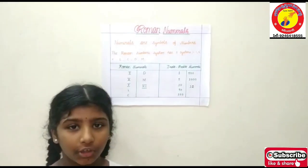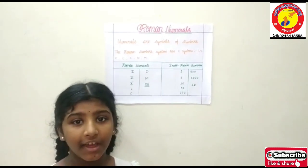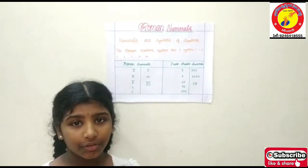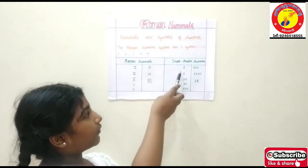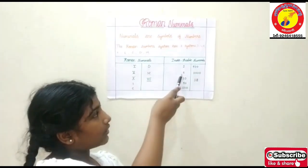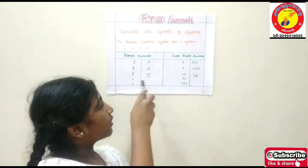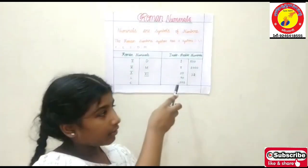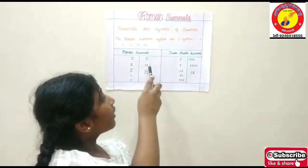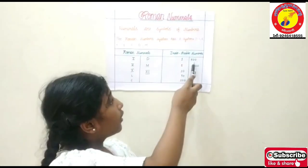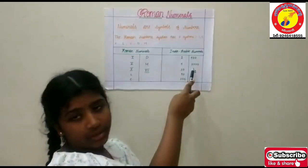Now I am going to explain how to write big numbers in Roman numerals. I stands for 1, V stands for 5, X stands for 10, L stands for 50, C stands for 100, D stands for 500, M stands for 1000.